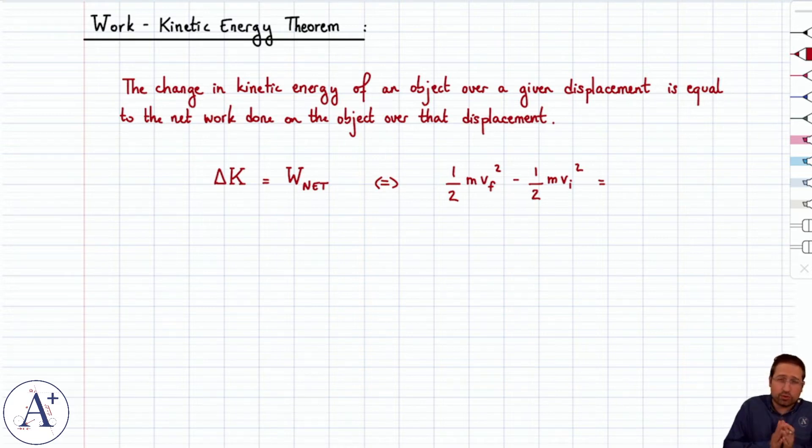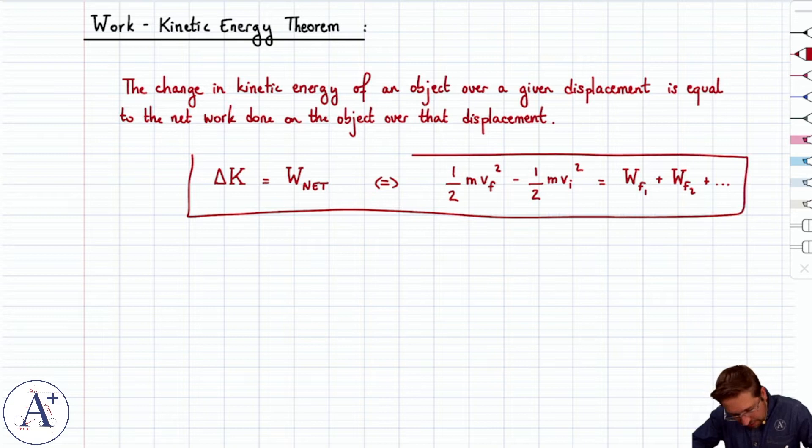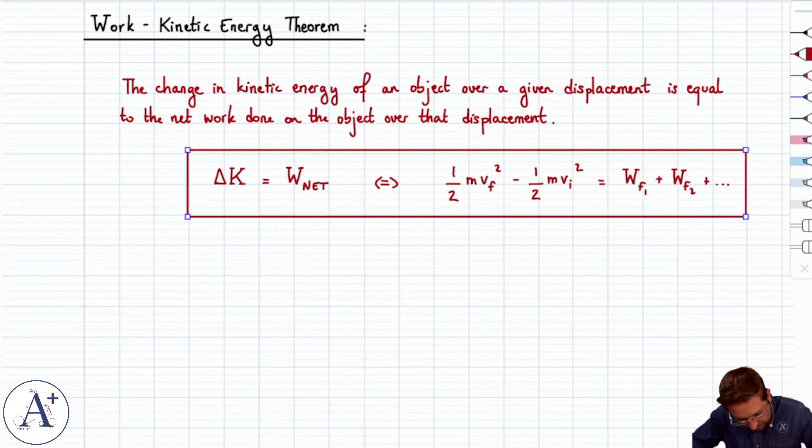So, delta k equals work net is nice. In practice for now, we will write it one-half mv final squared minus one-half mv initial squared is equal to the net work, which as you know is the work of F1 plus the work of F2, etc. All the forces acting on your system or your object over the displacement.